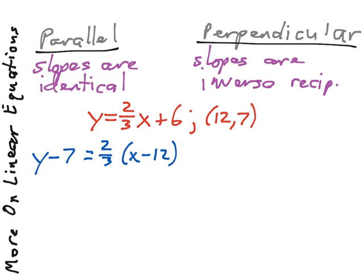We could go through and simplify this. y = 2/3x - 8 + 7. 2/3 of 12 is 8. Added 7 to both sides. y = 2/3x - 1.